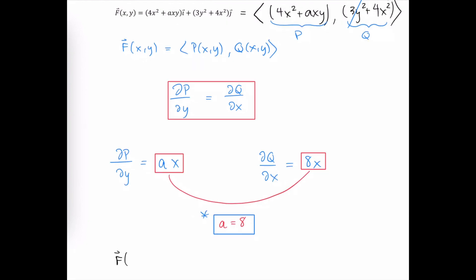Let's complete part a by rewriting the conservative vector field, which is now 4x squared plus 8xy in the direction of i, and 3y squared plus 4x squared in the direction of j.